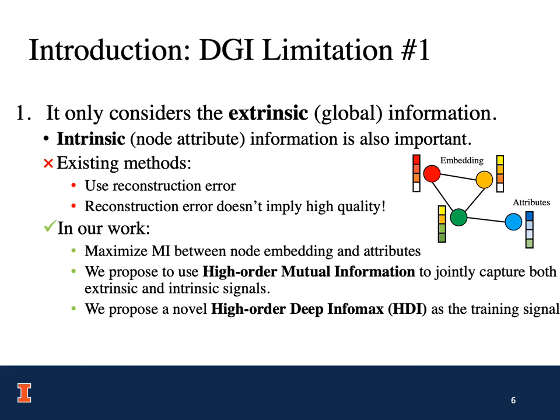However, there are two limitations of DGI. Firstly, it only considers the intrinsic global information, but it ignores the intrinsic node attribute information. We believe that a node-embedding should effectively capture the node attribute information. Most existing methods use the reconstruction error to capture this information, but the reconstruction error does not necessarily imply high quality of the node-embedding. In our work, we propose to capture the intrinsic information by maximizing the mutual information between the node-embedding and the attributes.